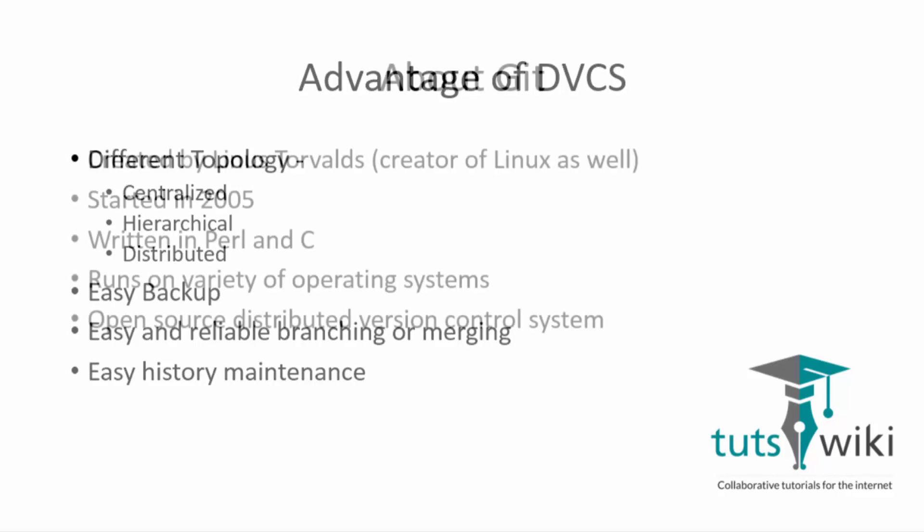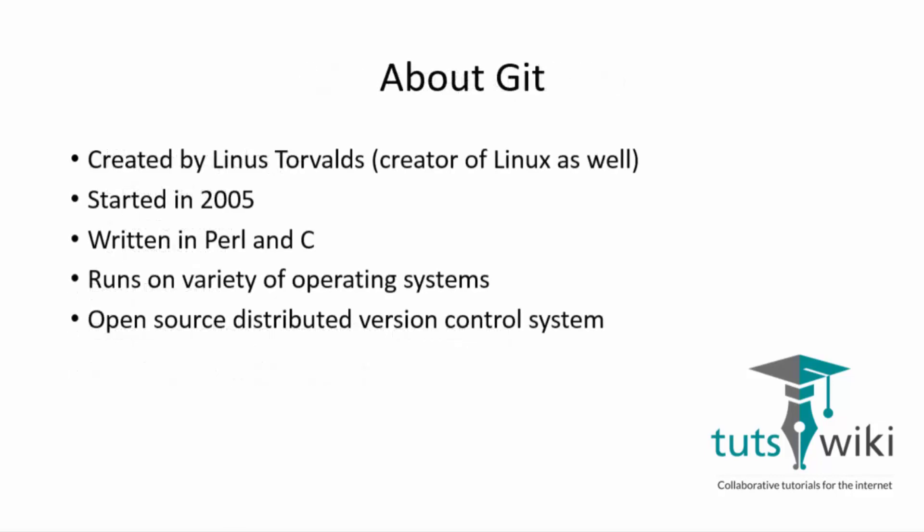Now, what is Git? First of all, Git is created by Linus Torvalds, who is also the creator of Linux. It was started in 2005. It is written in Perl and C. It runs on a variety of operating systems. Git is a free and open source distributed version control system designed to handle everything from small to large projects with speed and efficiency.